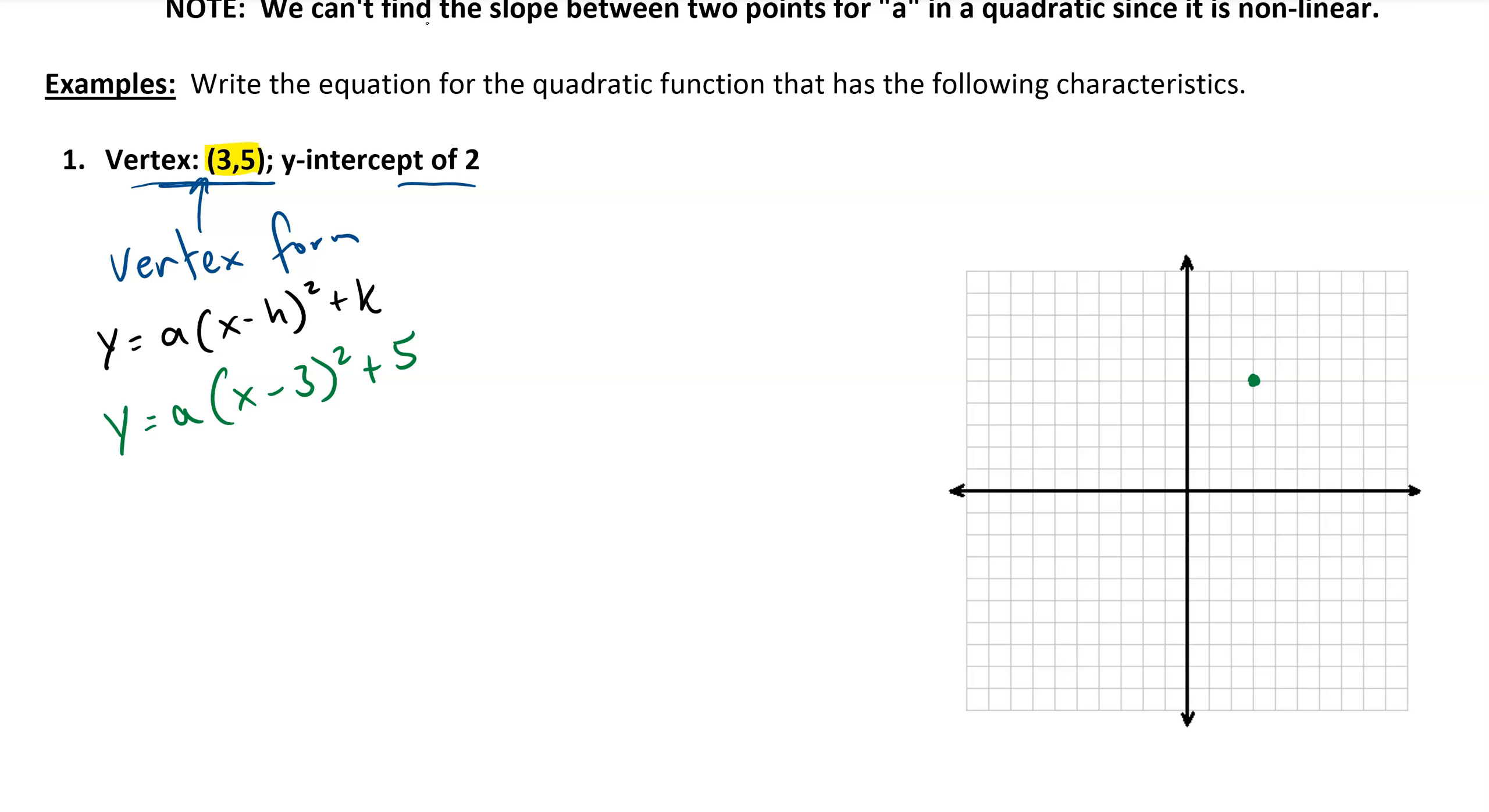Then the second bit of information is that the y-intercept is at 2, so (0, 2) is going to be a point on the graph. And that tells me a couple things. Knowing that this is the vertex, I know that my quadratic function is going to have to slope downward, so my a value has to be negative.